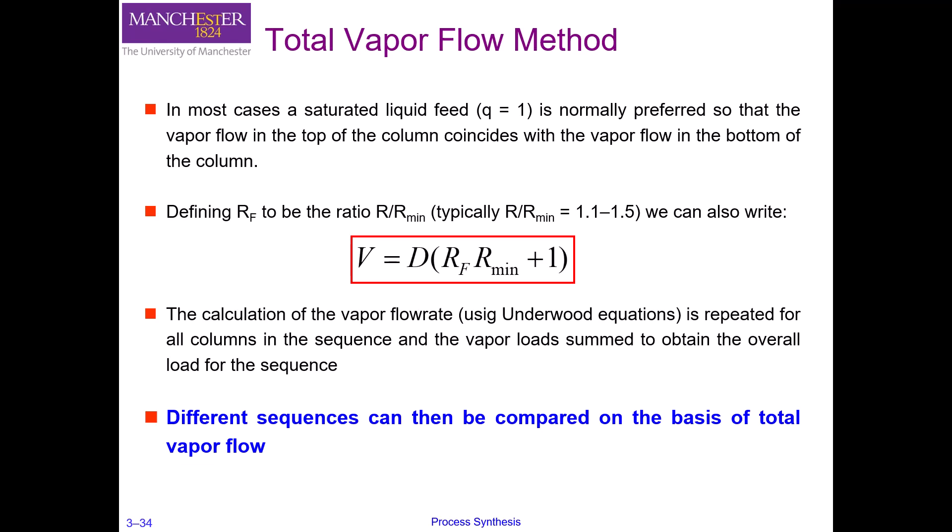This method minimizes the overall vapor load associated with a sequence. However, it is rather complicated and involves a lot of calculation, because you have to solve the Underwood equation for each column in the sequence, so it cannot be considered a true shortcut design. For example, with a five-component mixture you can have possibly 14 different sequences, each with four distillation columns (n−1). That means you have to apply the Underwood equation 14 times 4, which is 56 times, to calculate the vapor flow rate of all individual columns and then sum them up. That is a lot of work.